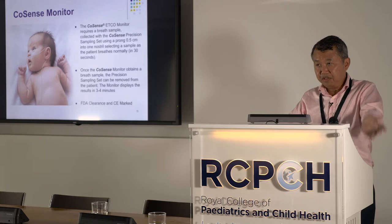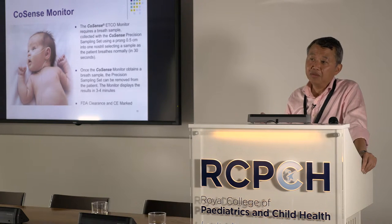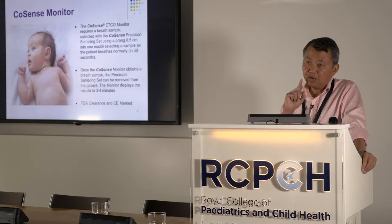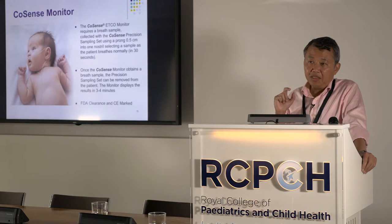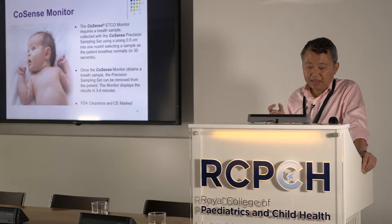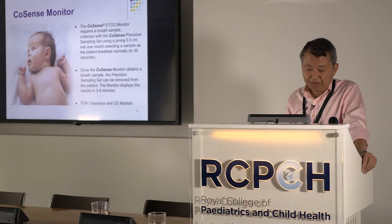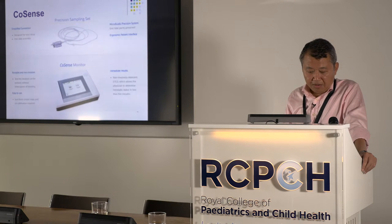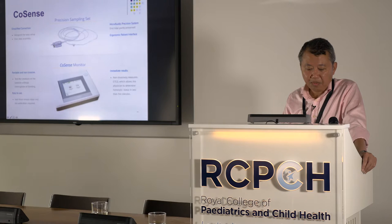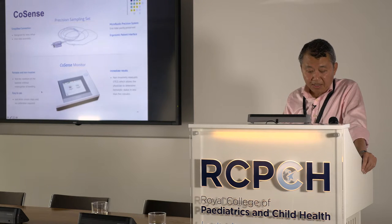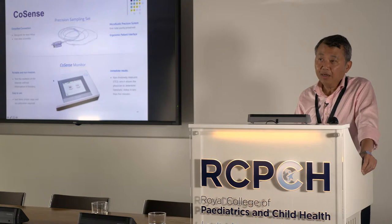You can see the device here. It measures a breath sample using a single prong that goes into one nostril and takes up to 30 seconds to detect a breath. After that, you remove the sampling set and the device shows the ETCO results in three to four minutes. It is FDA-approved and CE-marked. The sampling set attaches to the monitor at one end, and the prong is placed in one nostril of the baby — it's a one-step assembly, very non-invasive.